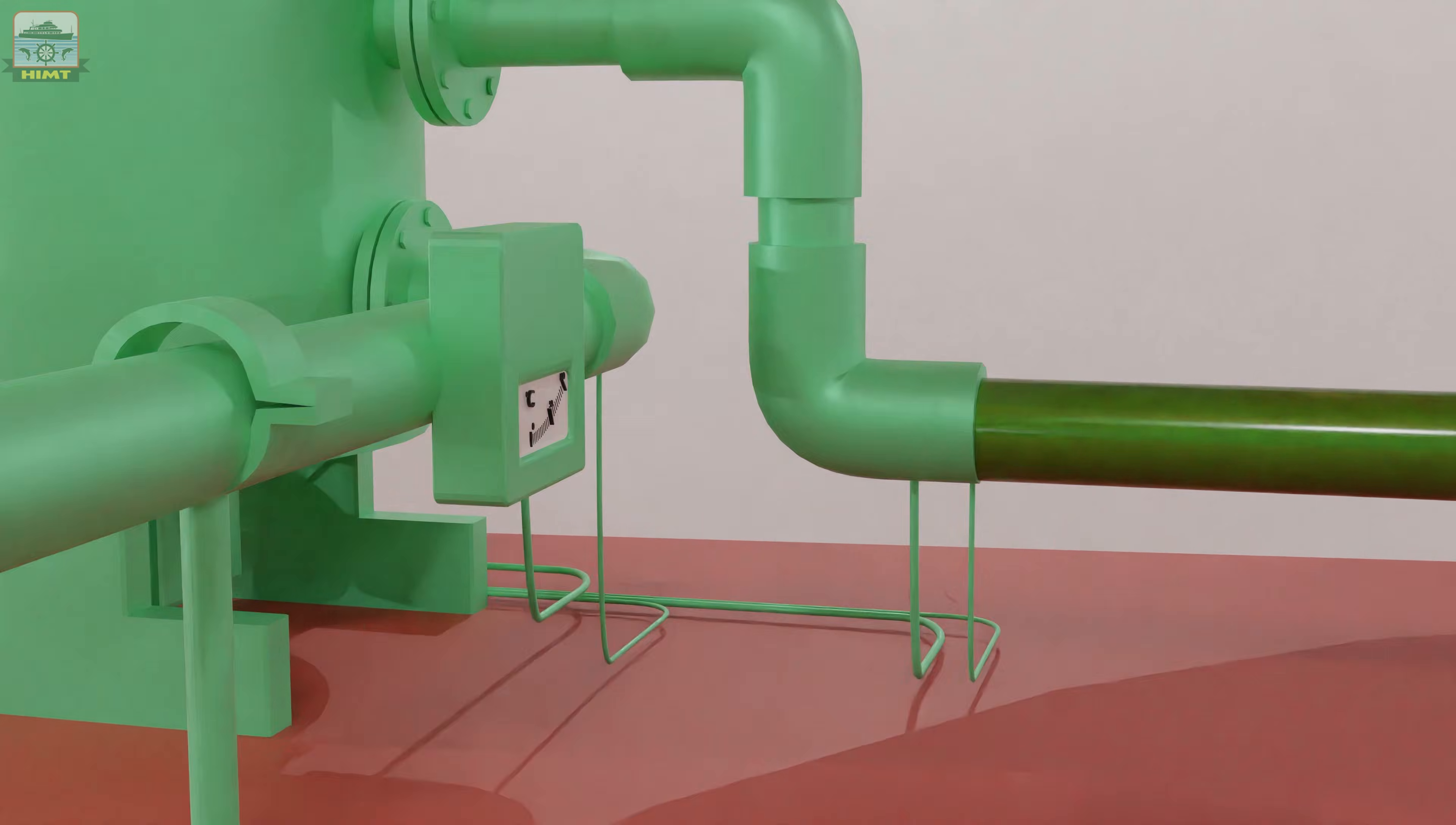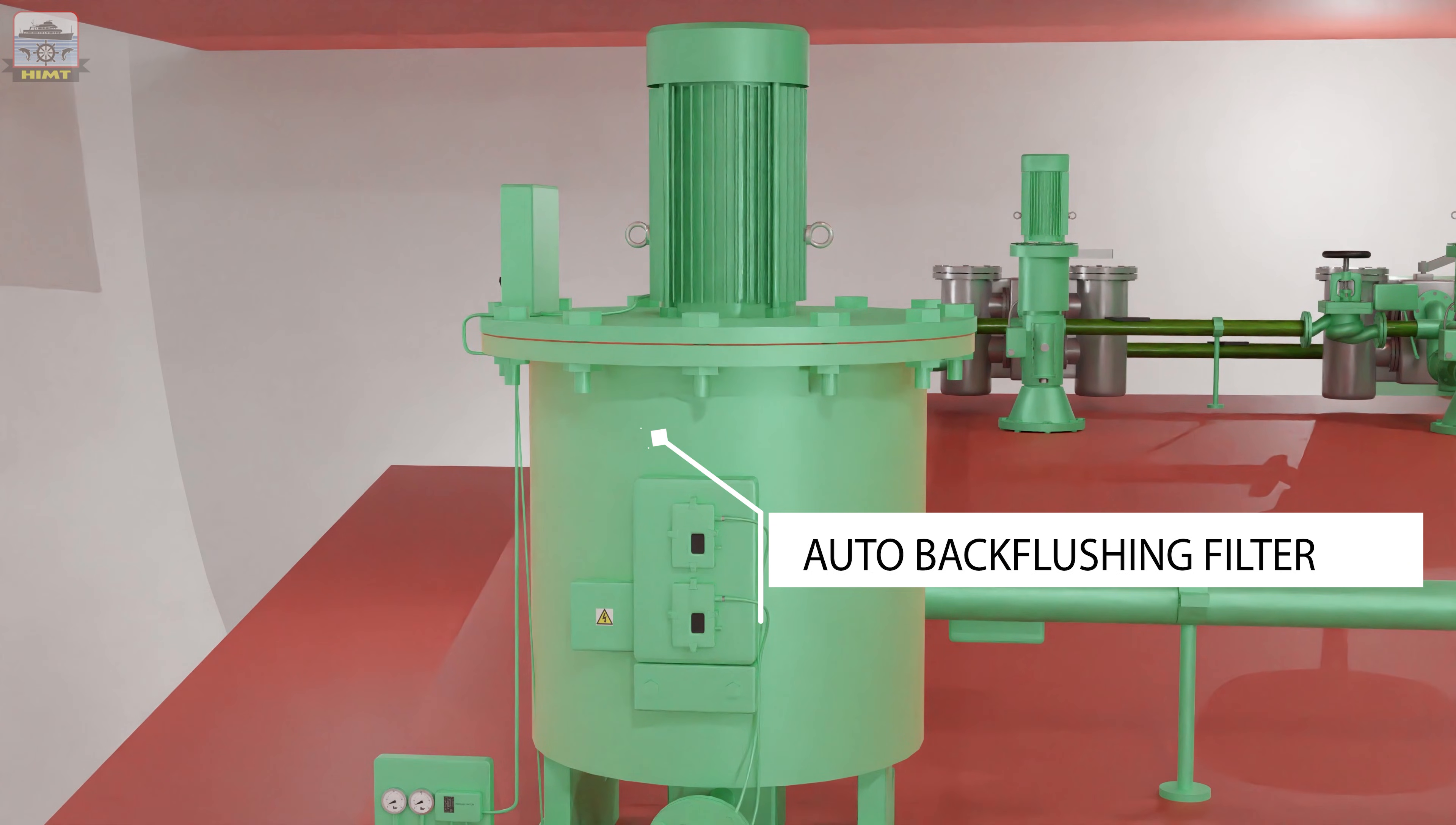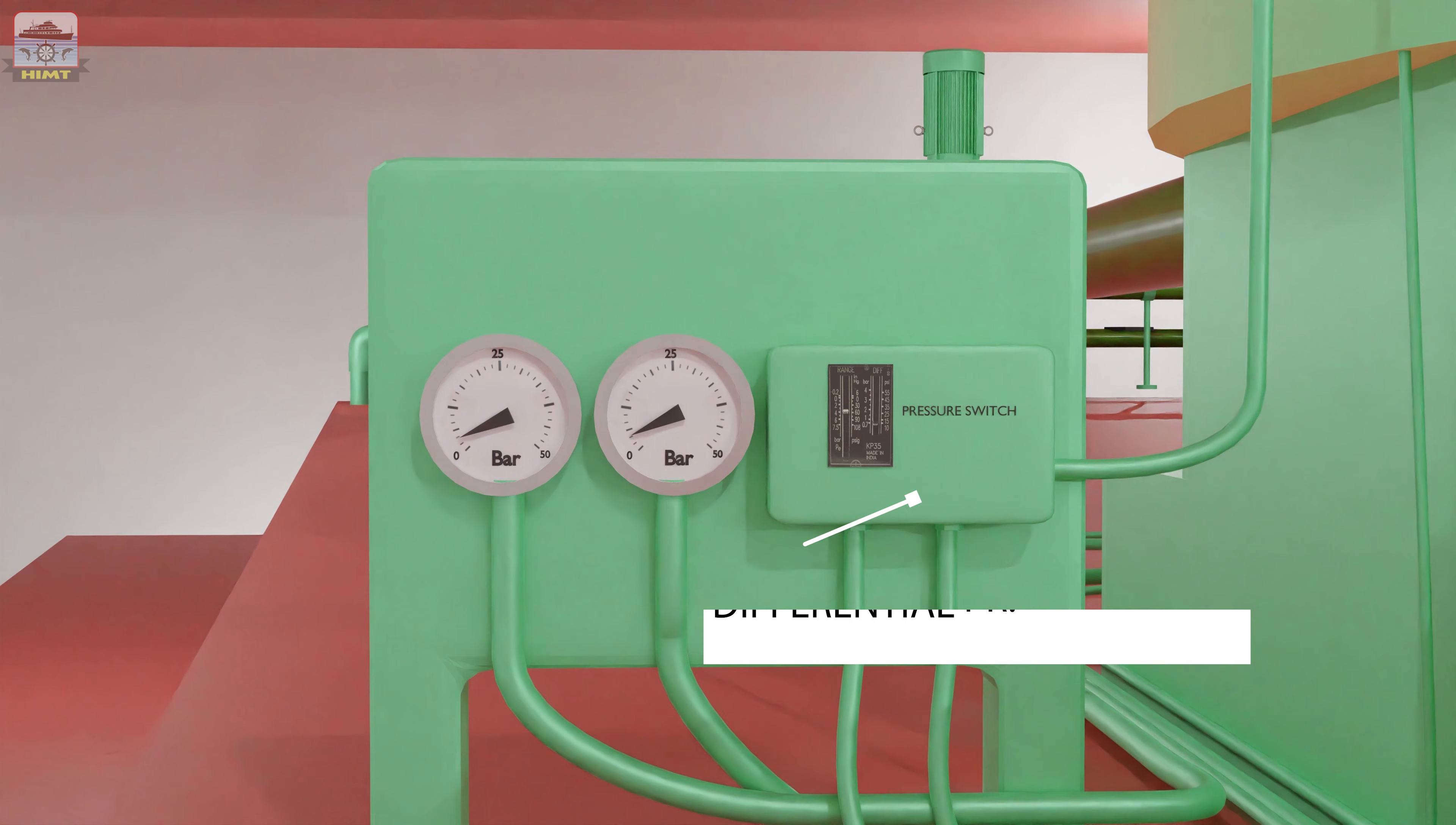From the cooler, the oil flows to an automatic back flushing filter. When the filter elements are clogged, filtered oil from some elements is made to pass through other clogged elements in the opposite direction to remove debris, thereby facilitating cleaning without dismantling the filter. The back flushed oil flows through a drain line to a lube oil drain tank. A solenoid operated valve in the drain line opens only during back flushing operation. A differential pressure switch senses high differential pressure across the filter when clogged and initiates the back flushing cycle.